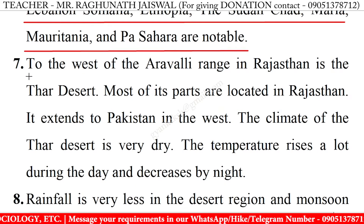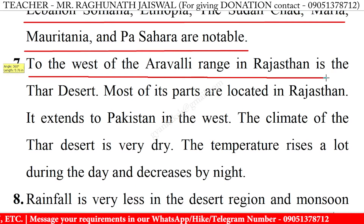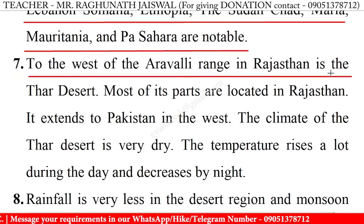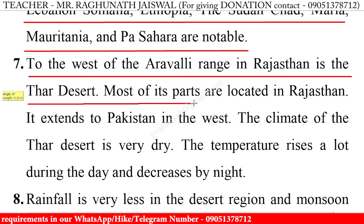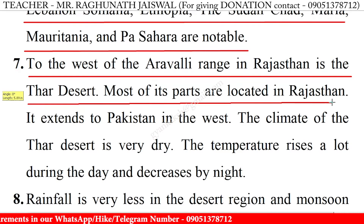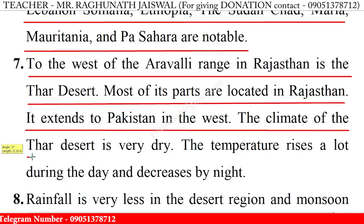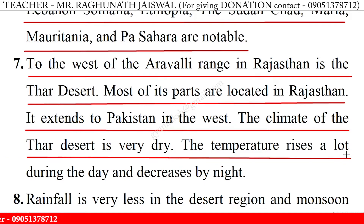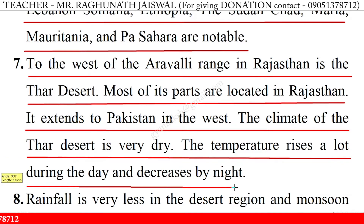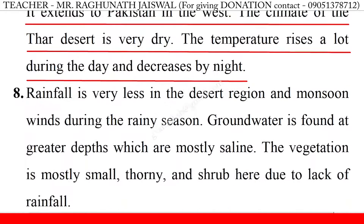7. To the west of the Aravalli Range in Rajasthan is the Thar Desert. Most of its parts are located in Rajasthan. It extends to Pakistan in the west. The climate of the Thar Desert is very dry.